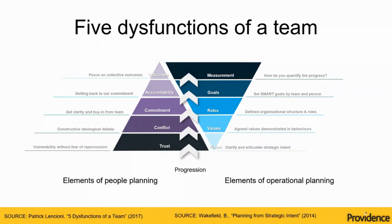What we're here today to look at is the implementation of Five Dysfunctions of a Team. It's a book written by Patrick Lencioni, probably the most appallingly named book I've ever seen, because it's actually about the principles of high-performing teams. But I'm sure someone in marketing thought that was a clever idea.